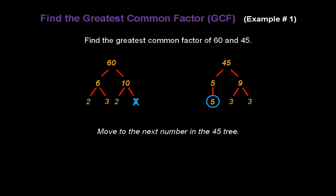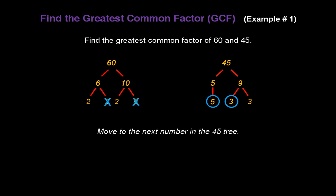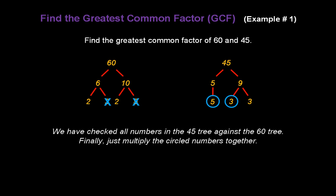Moving to the next number in the 45 tree, it's a 3. Is there a 3 in the other tree? Yes. So circle the 3 in the 45 tree, and don't forget to cross out the 3 in the other tree. Move to the next number in the 45 tree — it's another 3. Is there another 3 in the other tree? The answer is no. So we're almost done. We've checked all numbers in the 45 tree against the 60 tree. So finally, we just multiply the circled numbers together. And the greatest common factor of 60 and 45 is 5 times 3, or 15.